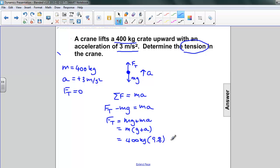and our acceleration is a positive 3, so we have 400 kilograms times 12.8 meters per second squared,